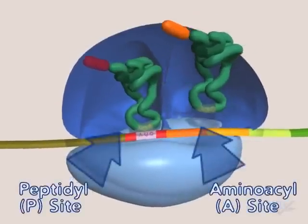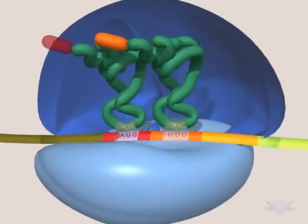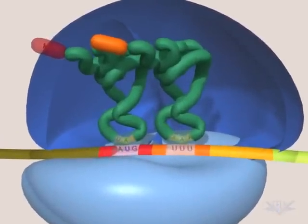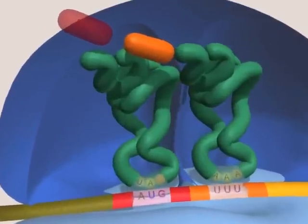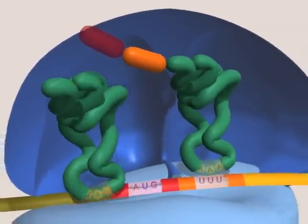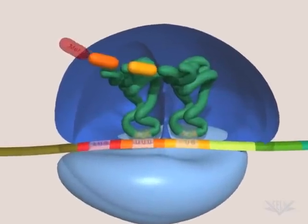The first tRNA occupies the P-site. The second tRNA enters the A-site and is complementary to the second mRNA codon. The methionine is then transferred to the A-site amino acid. The first tRNA exits. The ribosome moves along the mRNA, and the next tRNA enters.